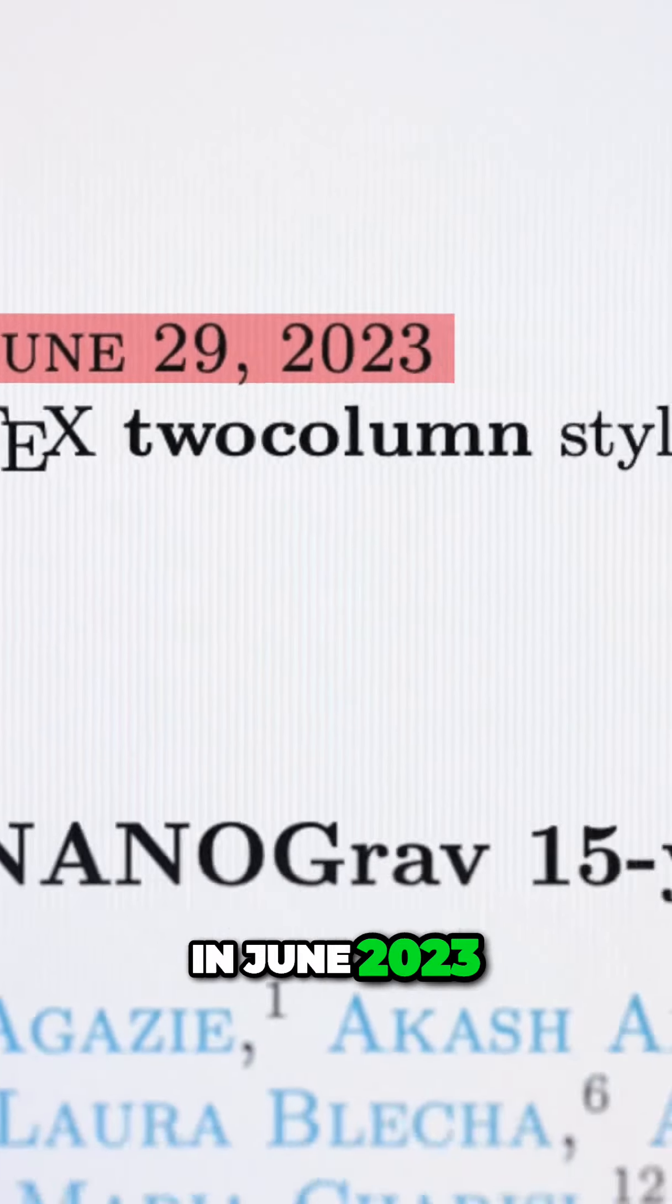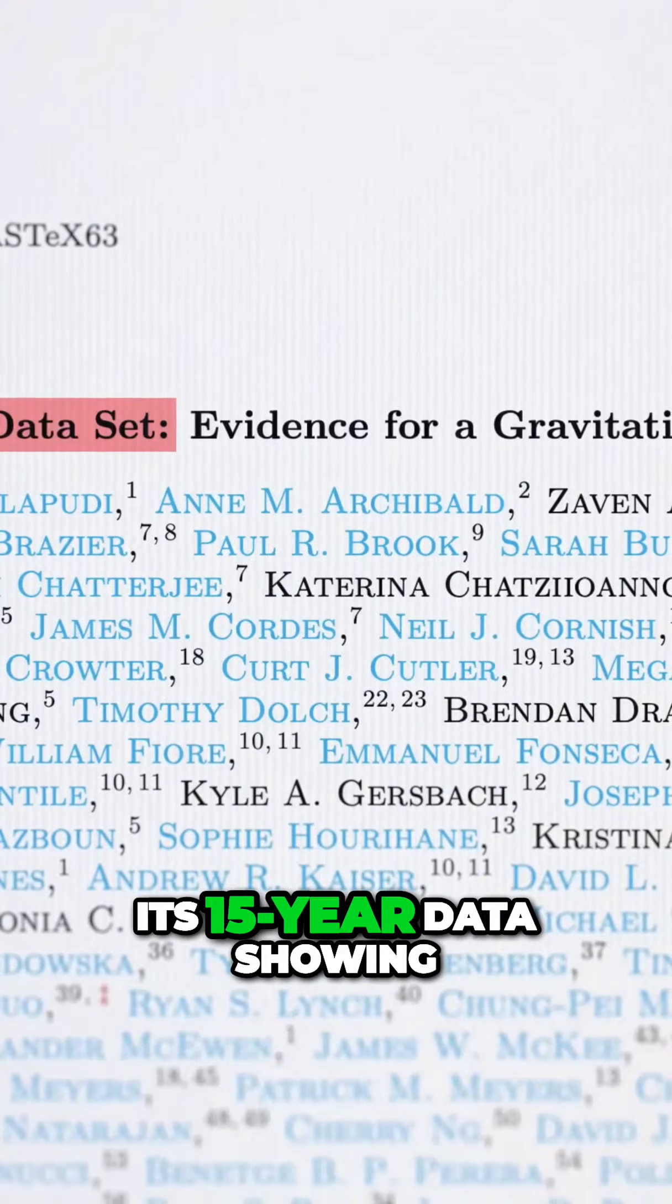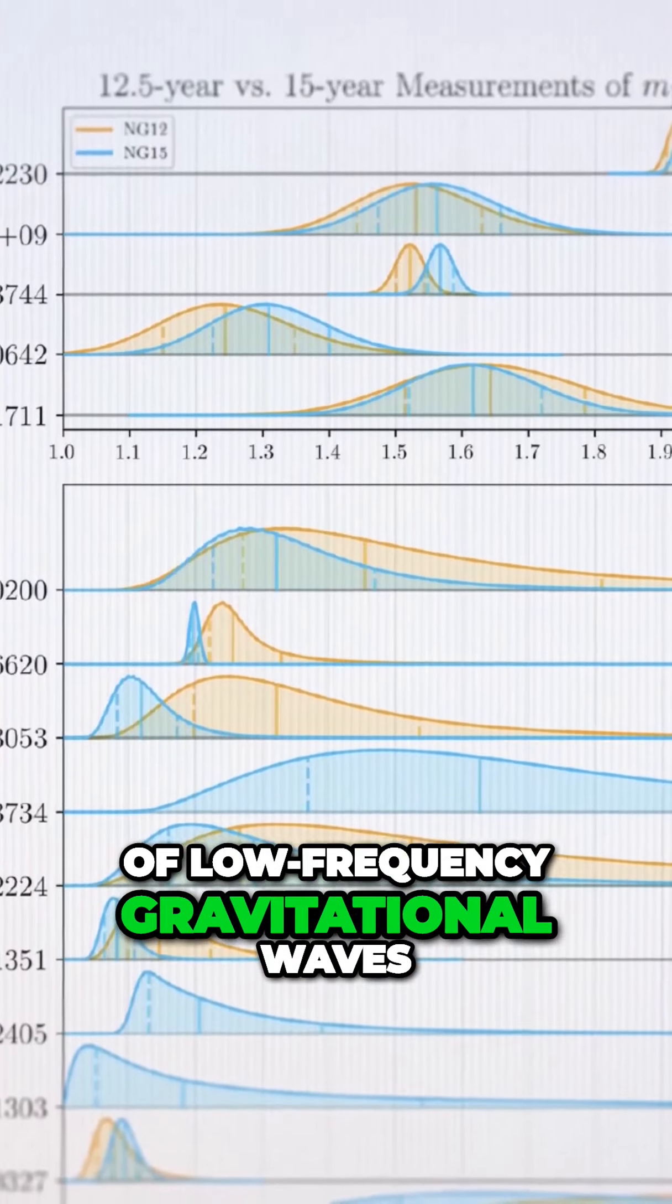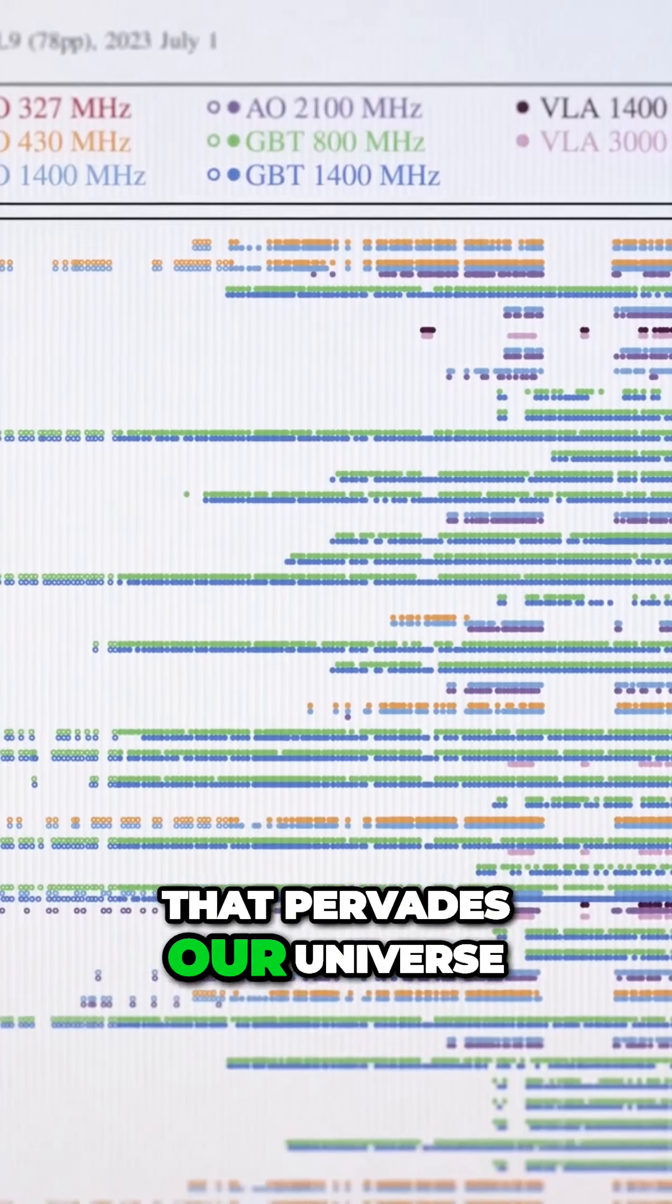In June 2023, Nanograv released its 15-year data showing compelling evidence for the background hum of low-frequency gravitational waves that pervades our universe.